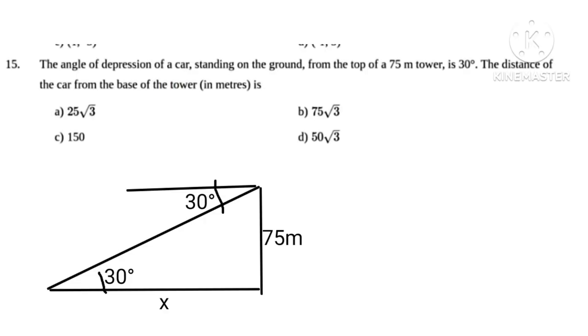Let us draw a figure where tan 30 degrees equals 75 upon x. 1 over square root 3 equals 75 upon x, therefore x equals 75 square root 3 meters.